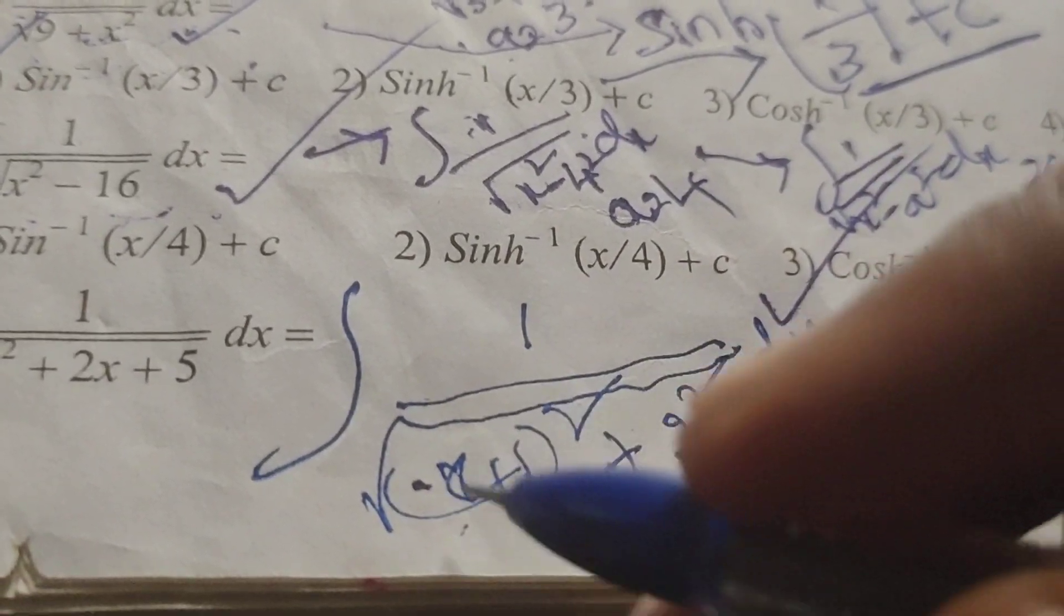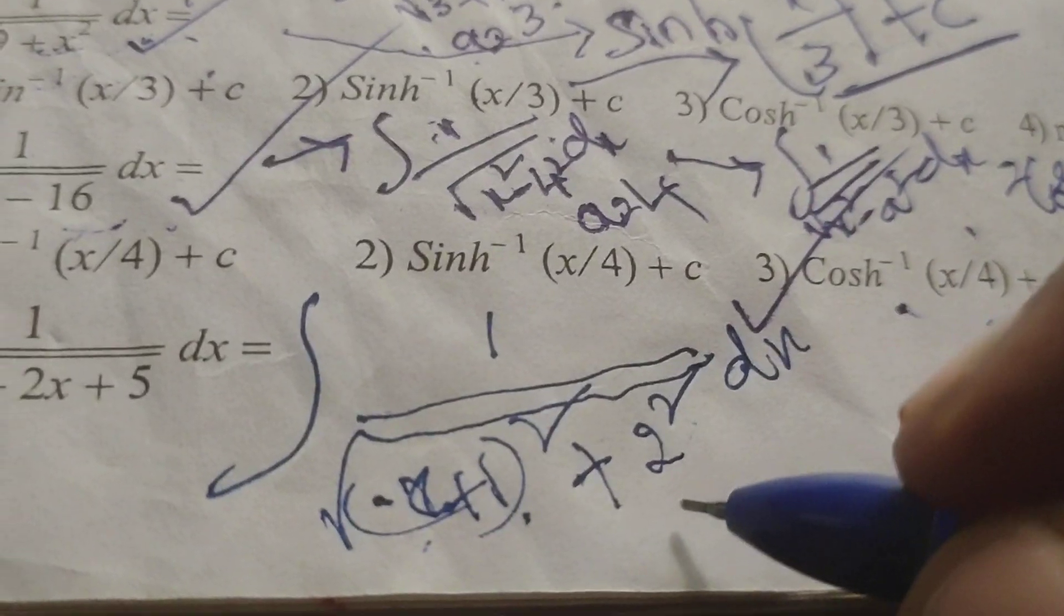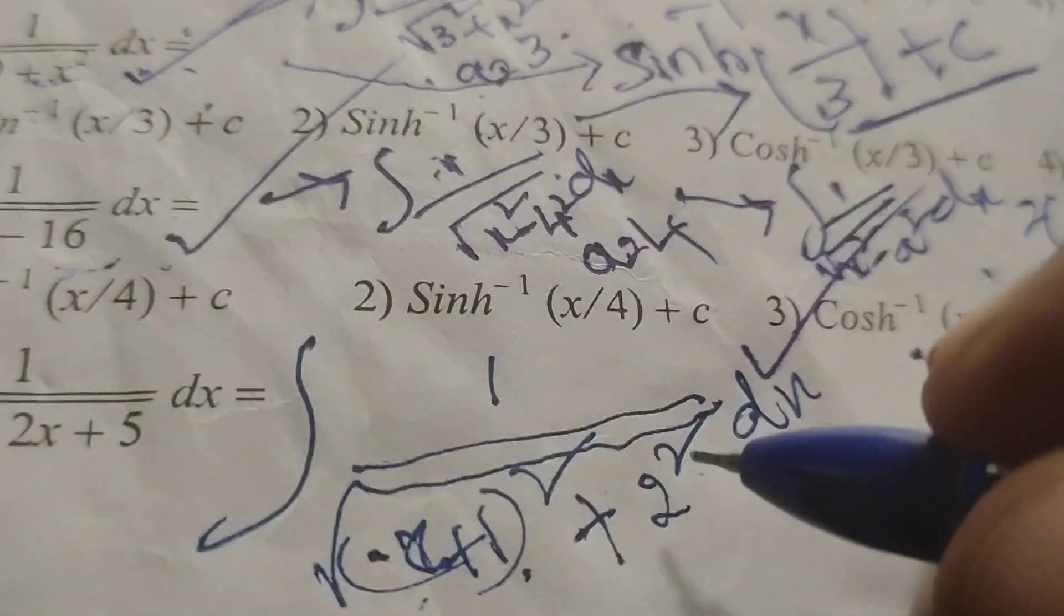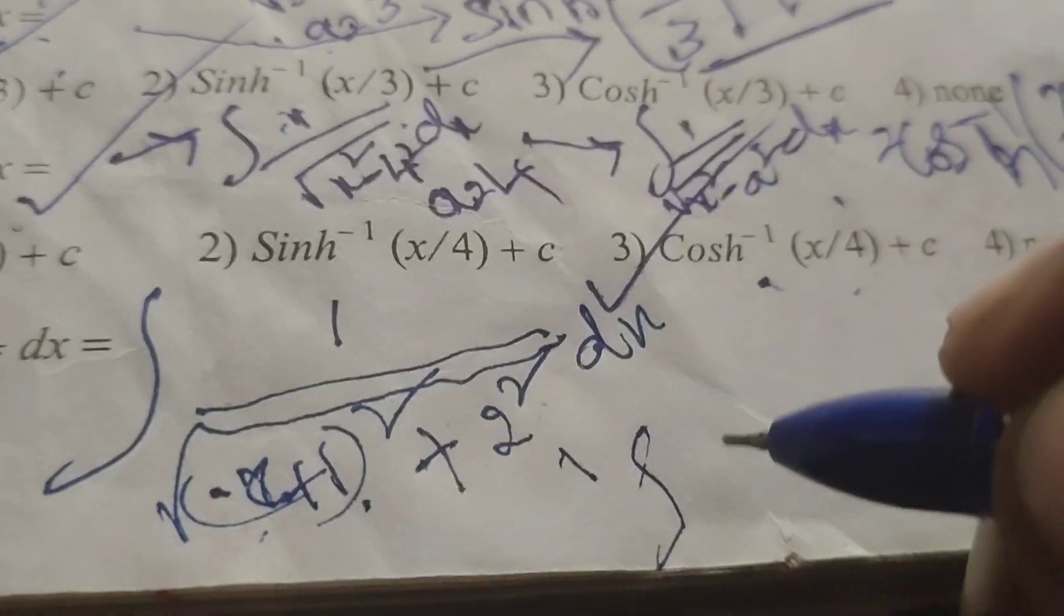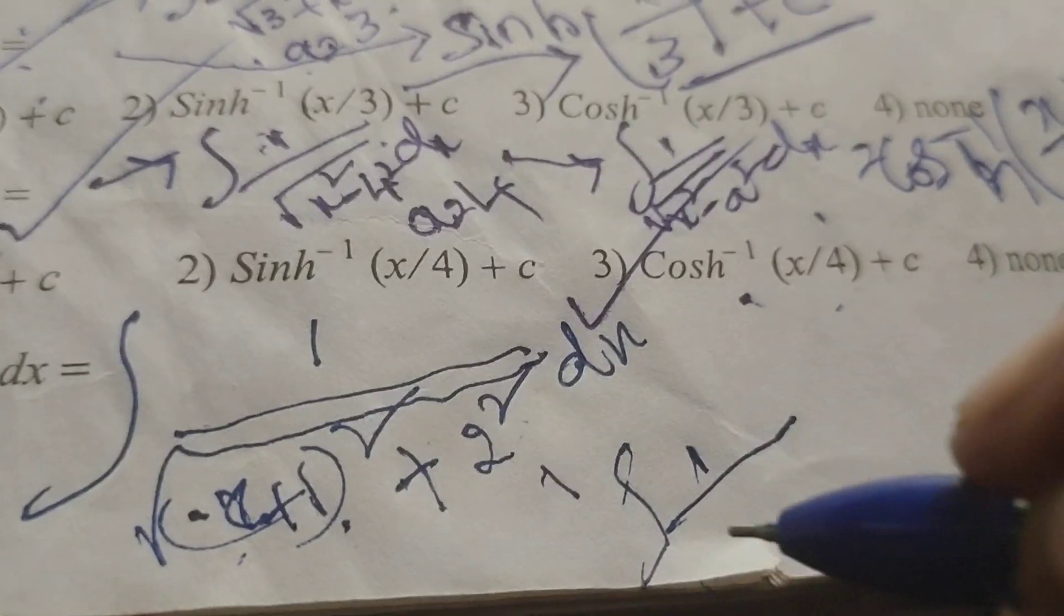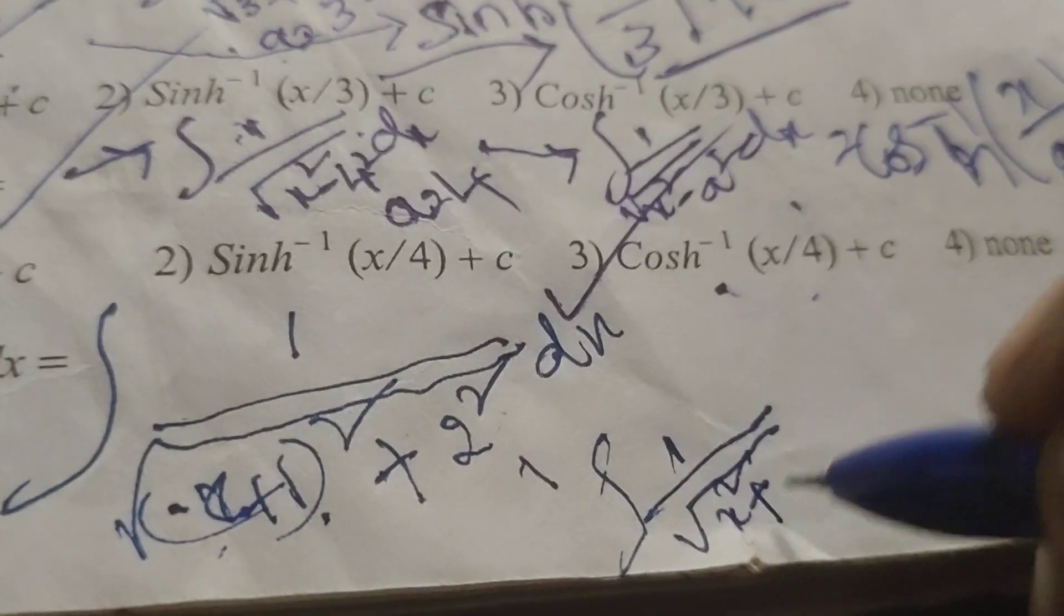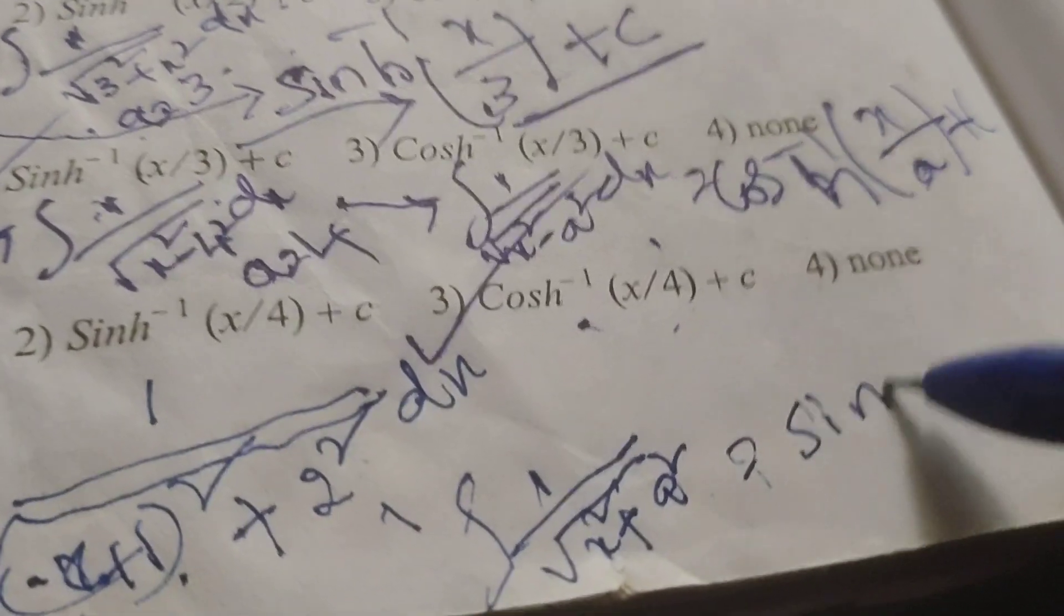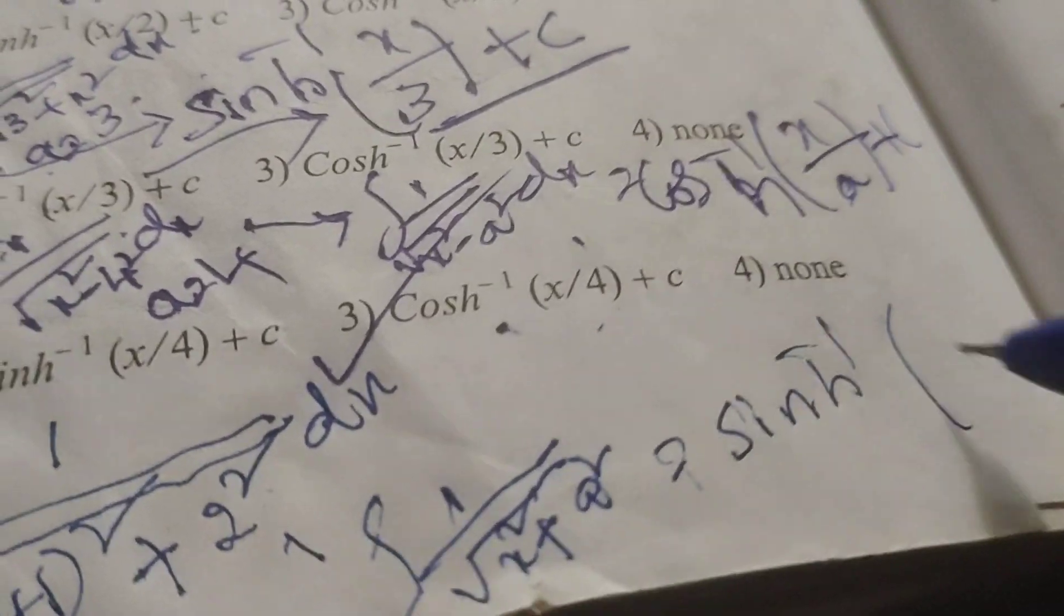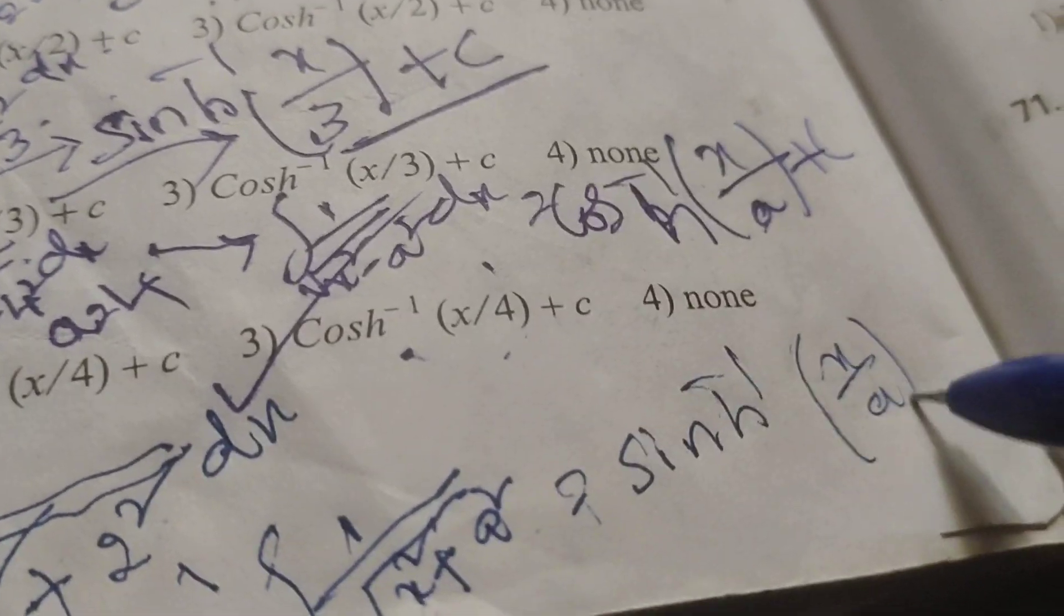Integral of 1 by root of x plus 1 whole square plus 2 square. Now applying the formulae: integral of 1 by root of x square plus a square, that is sinh inverse of x by a plus c.